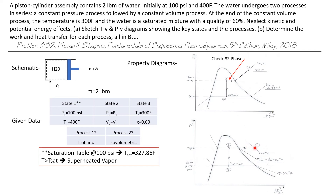If drawn correctly on the TV diagram, here's how it looks on a PV diagram. The 100 psi line is horizontal, and temperature lines on PV diagrams go down to the right. State one is superheated, where the 400 degree Fahrenheit line crosses the 100 psi line. The constant pressure process from state one to state two runs along this pressure line, then a constant volume line for process two to three drops down to state three at 66.98 psi and 300 degrees. We'll test whether state two is a saturated mixture.